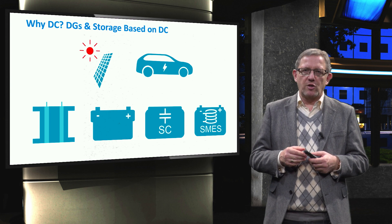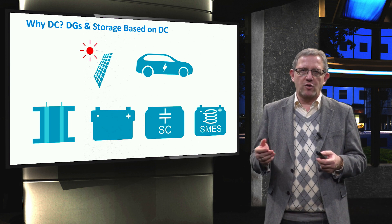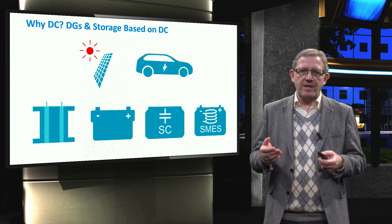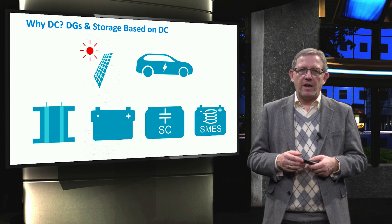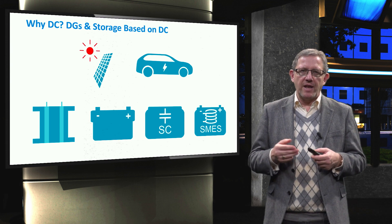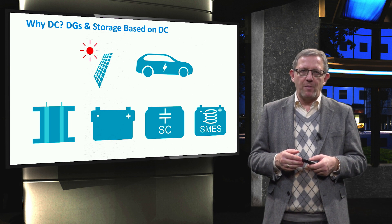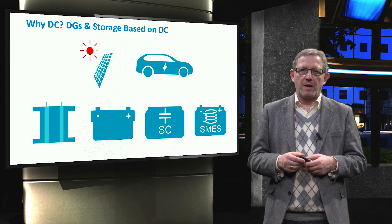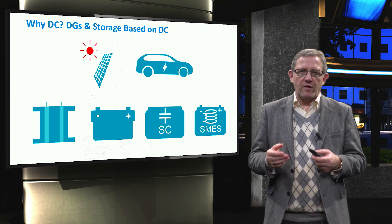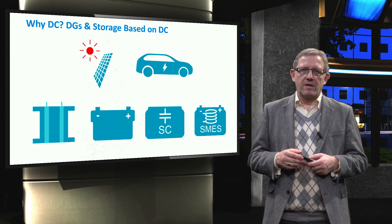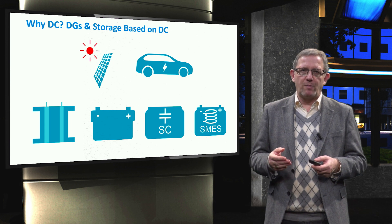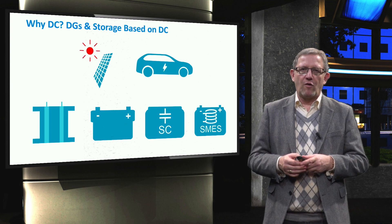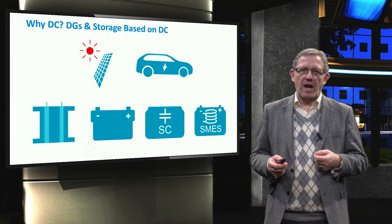Also, energy storage technologies like fuel cells, batteries, supercapacitors, and superconducting magnetic energy storage are inherently based on DC technology. It is evident that converting this power into AC as an intermediate step is absolutely unnecessary and would result in increased power losses and cost. The implementation of electrical networks based on direct current can help larger-scale and efficient integration of components such as renewable energy sources and storage.